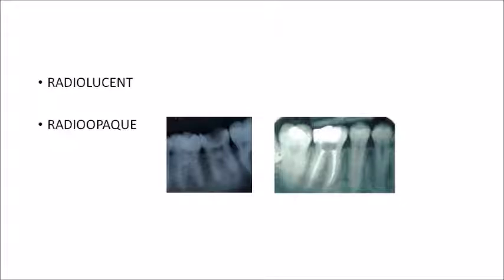You can see dental caries here — it has almost reached the pulp. Dental caries appears to be radiolucent in nature. It has invaded the enamel and dentin and has reached the pulp, so dental caries is radiolucent in nature.